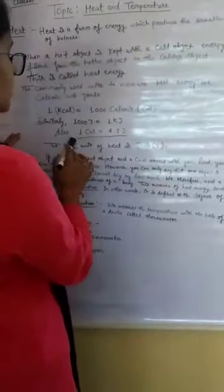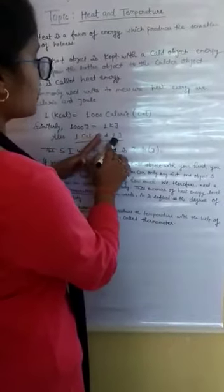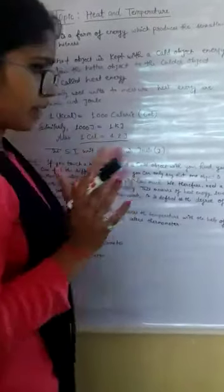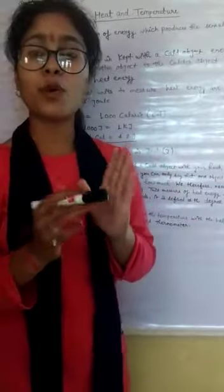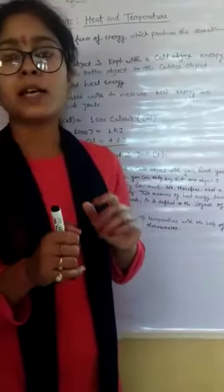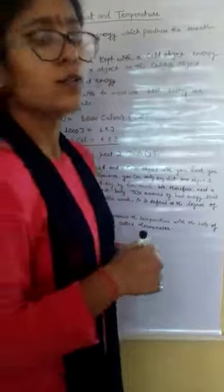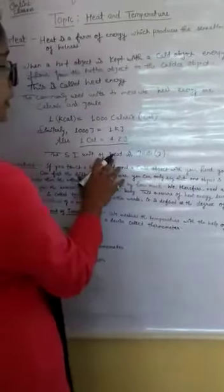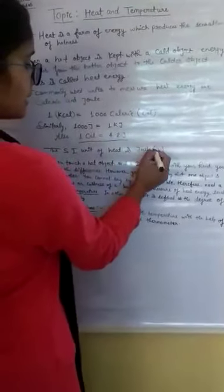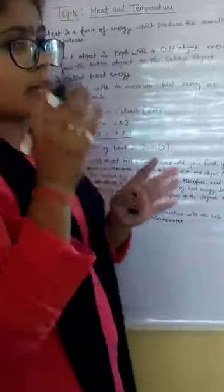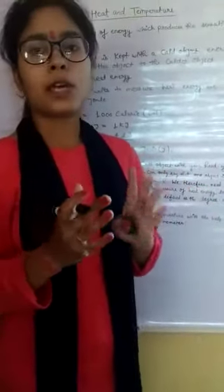And also, 1 kilocalorie is equal to 4.2 kilojoules. The SI unit of heat is joule.